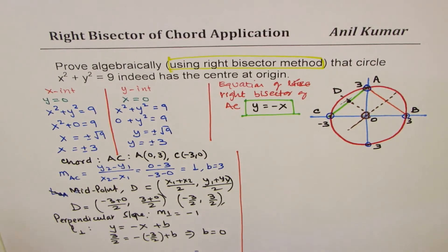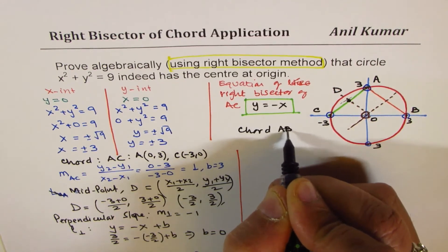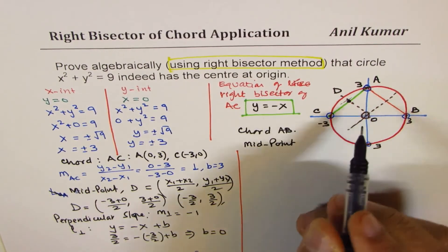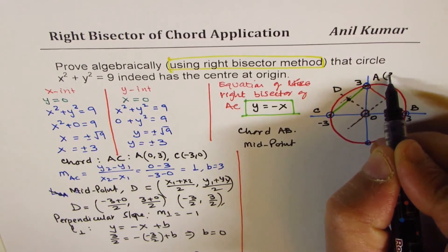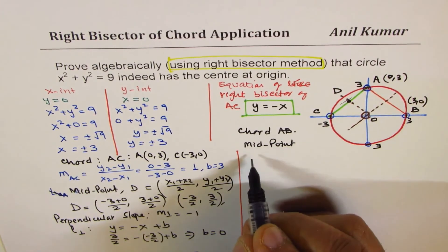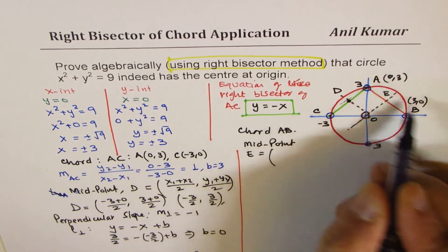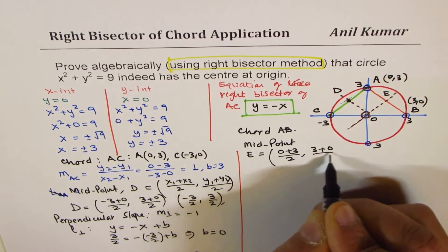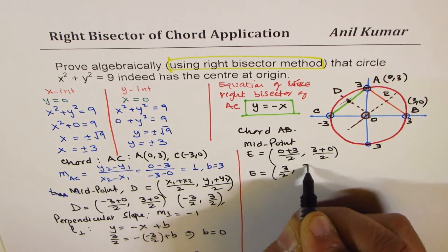Now we consider chord AB. Coordinates of A are (0, 3) and B are (3, 0). The midpoint E is (0 + 3)/2, (3 + 0)/2, which gives E = (3/2, 3/2).